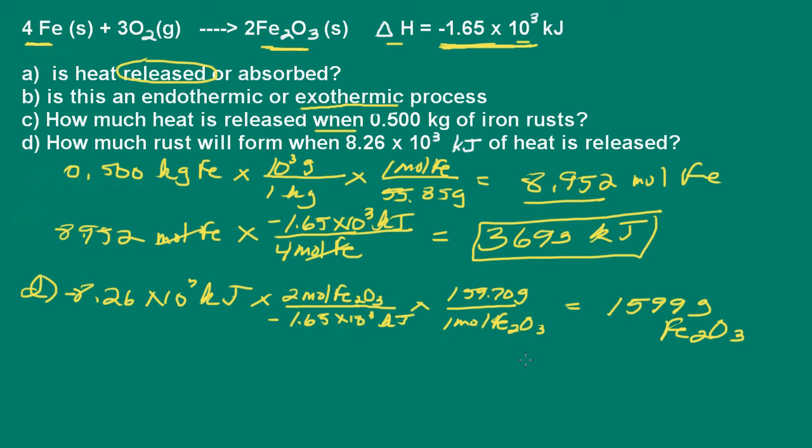And I end up with 1,599 grams of iron 3 oxide produced. So what we can do is we can change that to kilograms, so that would be 1.6 times 10 to the third kilograms of iron 3 oxide produced.